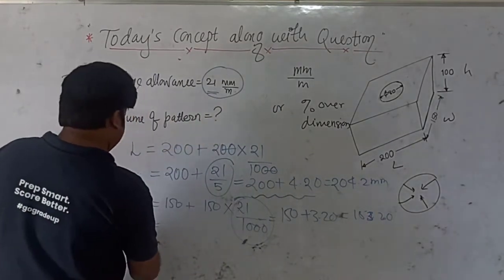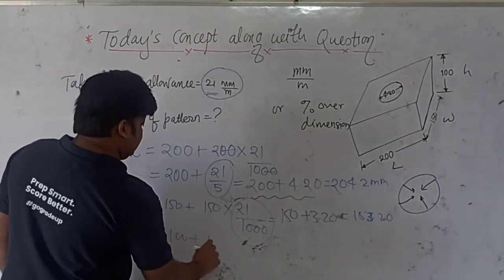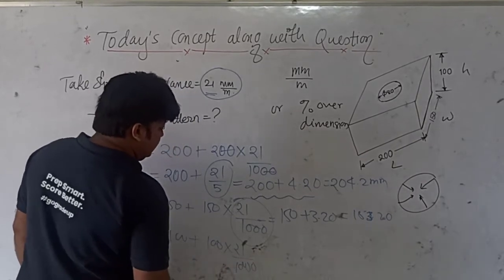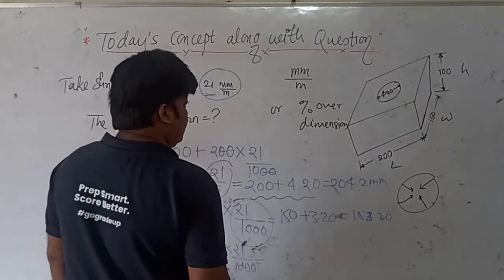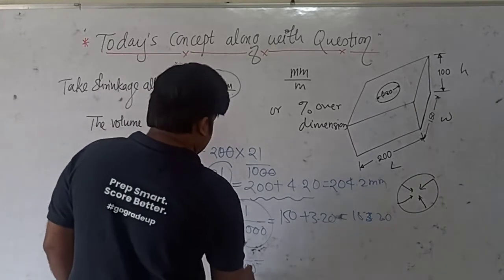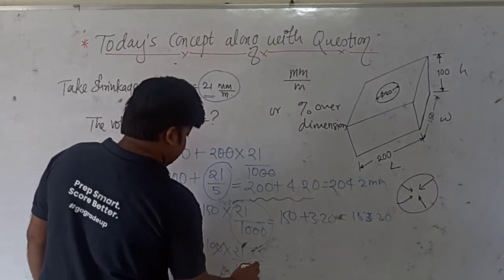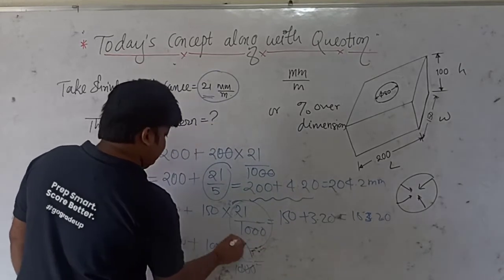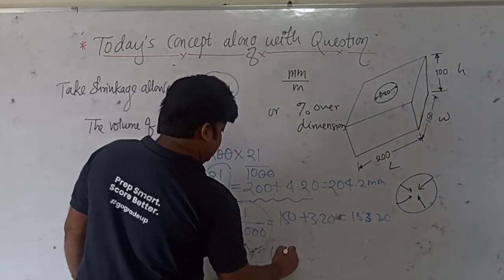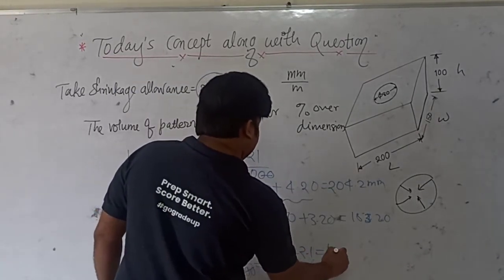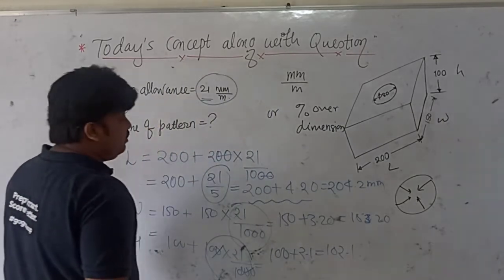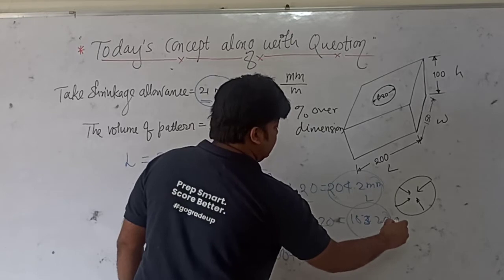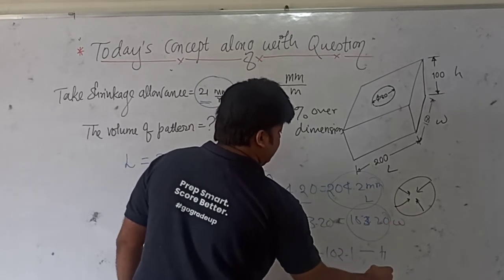And finally, the height: 100 mm plus the shrinkage allowance. That is 100 into 21 divided by 1000, which equals 2.1. So the pattern height will be 100 plus 2.1, giving 102.1 mm. These are the three linear dimensions of the pattern after provision of shrinkage allowance.